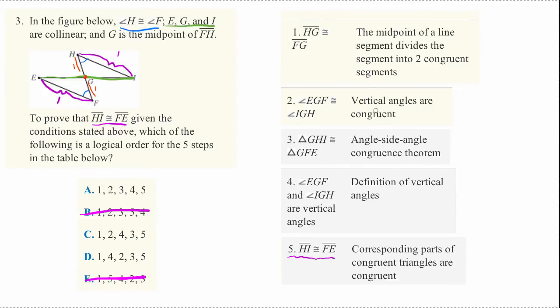But here, they proved that EGF and IGH are vertical angles. And that was by definition. And then in step two, they say that EGF and IGH, that's E to G to F is right here. And I to G to H is right here.